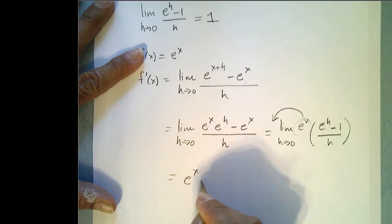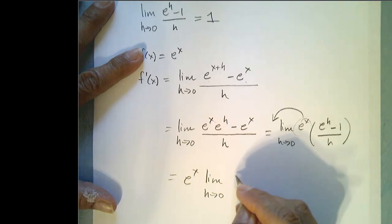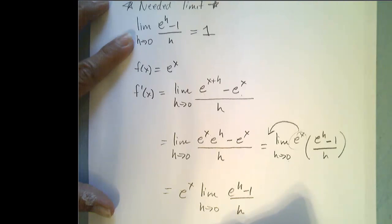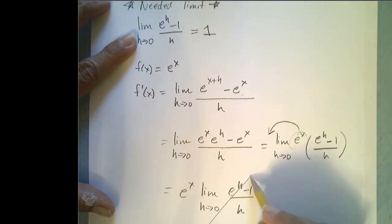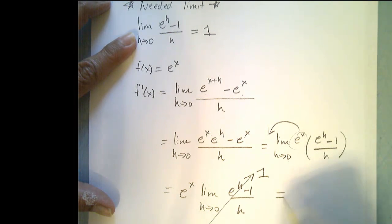So I have e to the x times the limit as h goes to 0, e to the h minus 1 over h. And as I promised, we need this limit right here. This limit goes off to 1, and I'm left with e to the x.